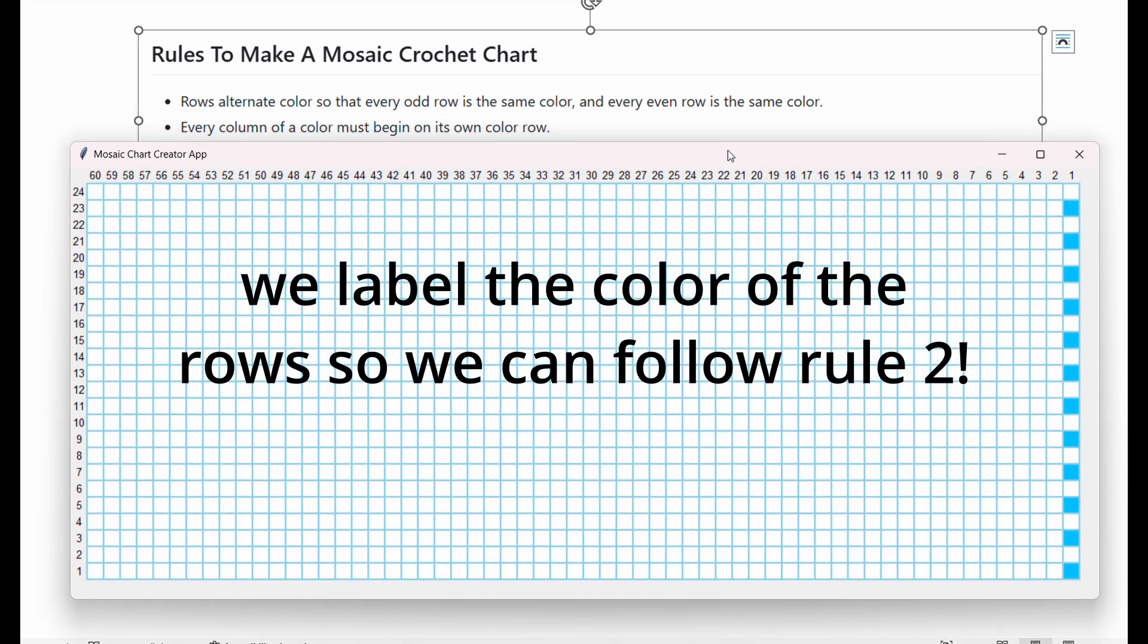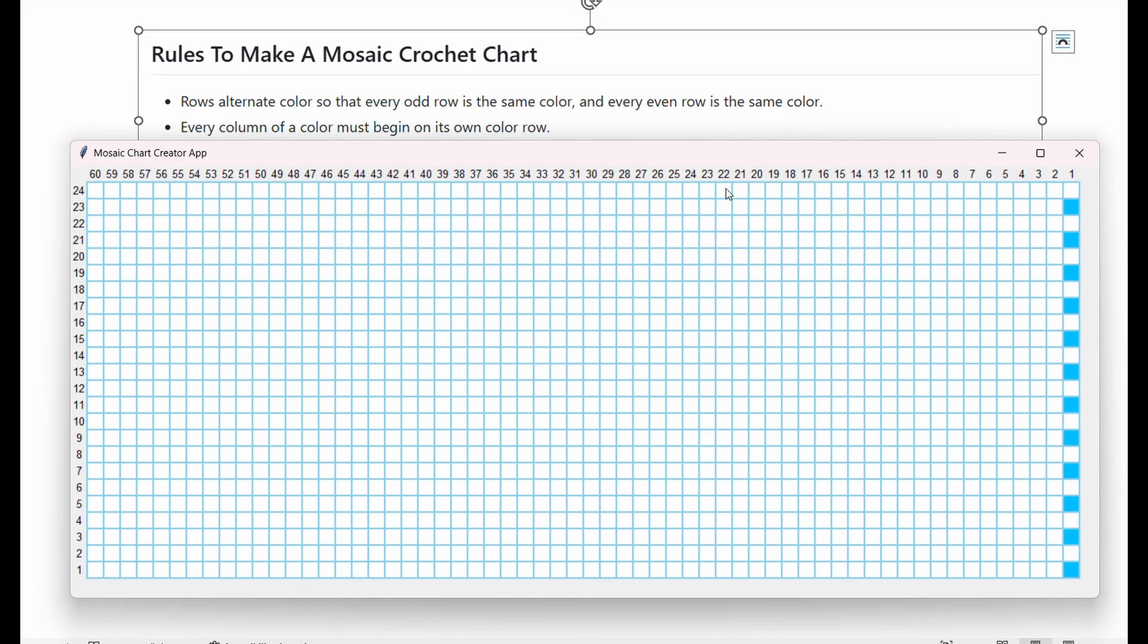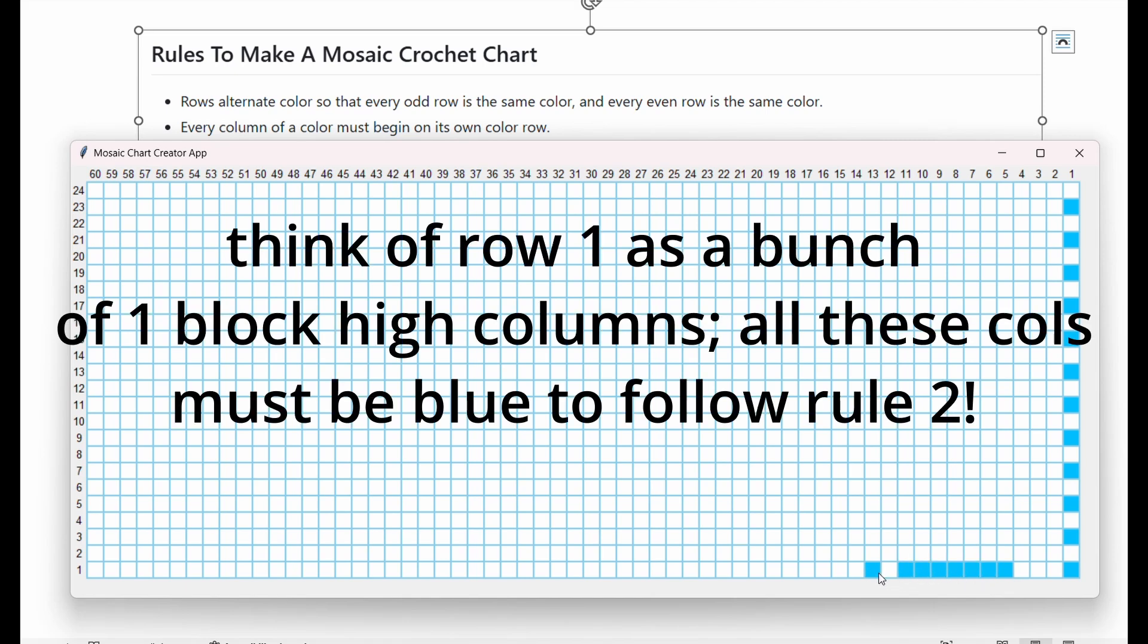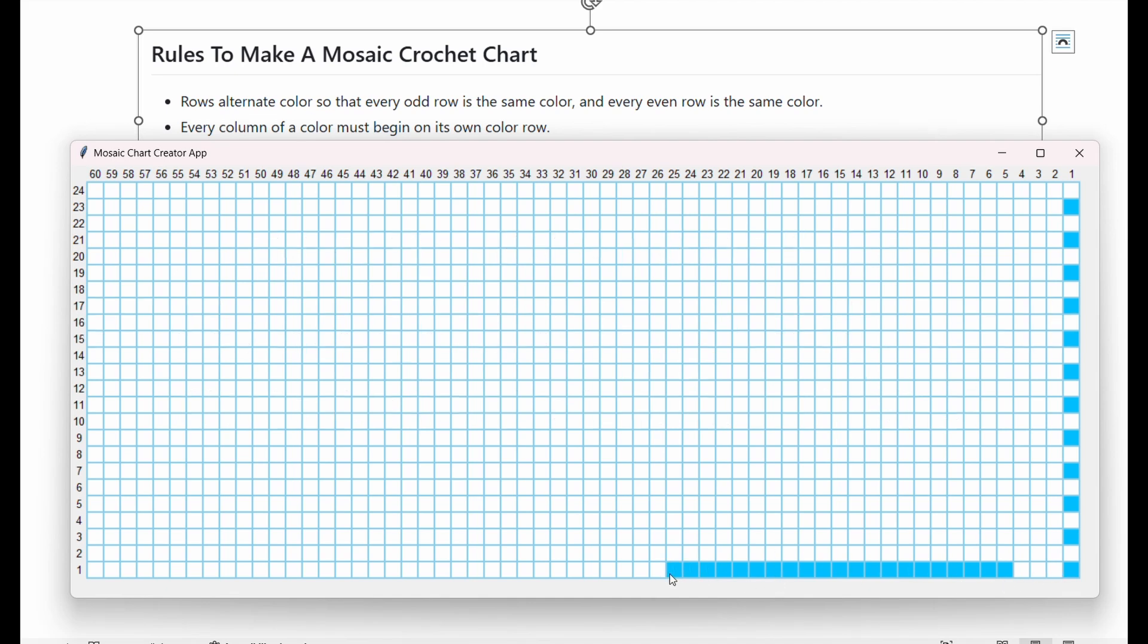Every column of a color must begin on its own row. From this information, we could go ahead and make our first row since your first row is just going to all be one color. Since every column of a color must begin on its own row, there's no way you could have white on this row.